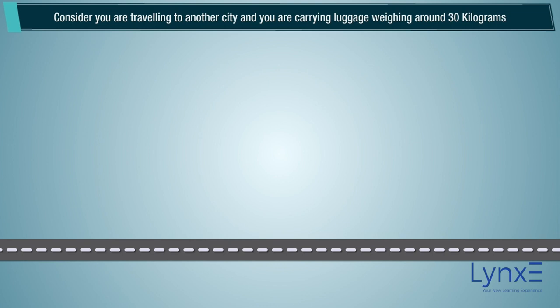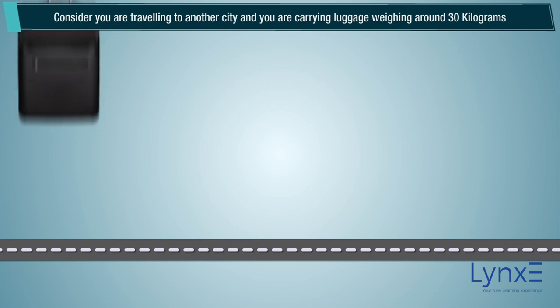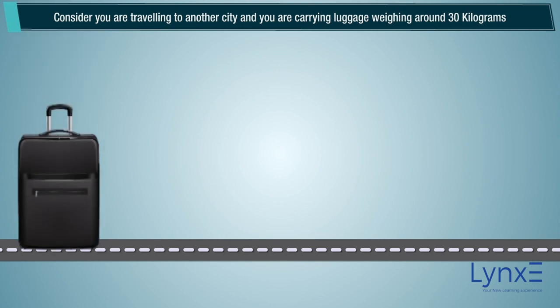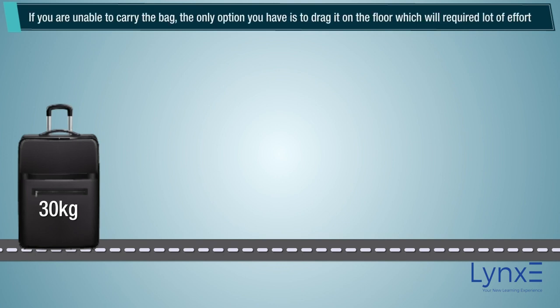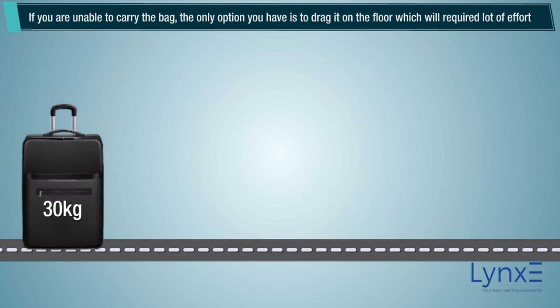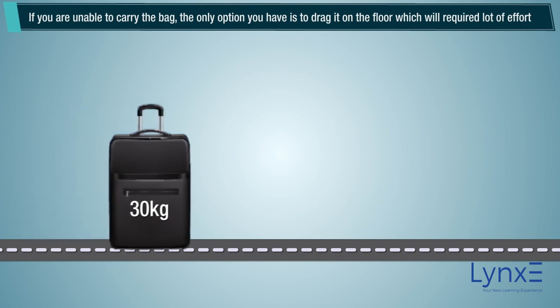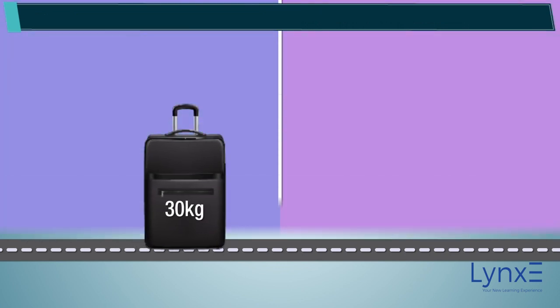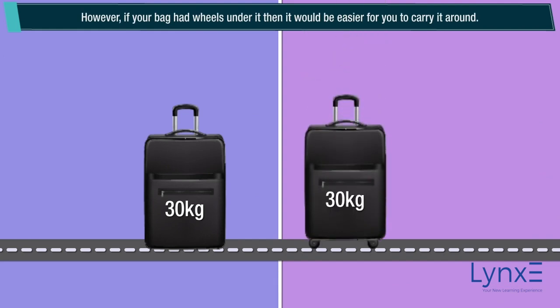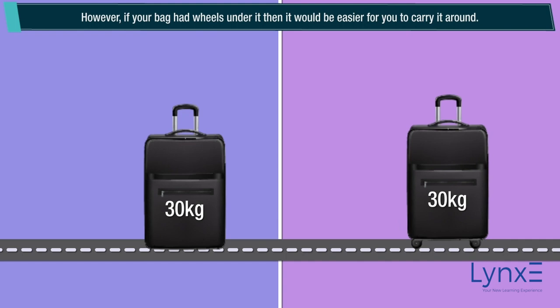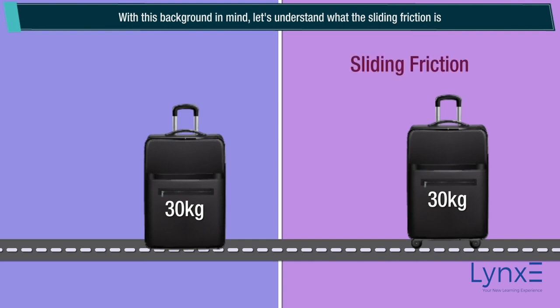Consider you are traveling to another city and you are carrying luggage weighing around 30 kg. If you are unable to carry the bag, the only option you have is to drag it on the floor, which will require a lot of effort. However, if your bag had wheels under it, then it would be easier for you to carry it around. With this background in mind, let's understand what sliding friction is.